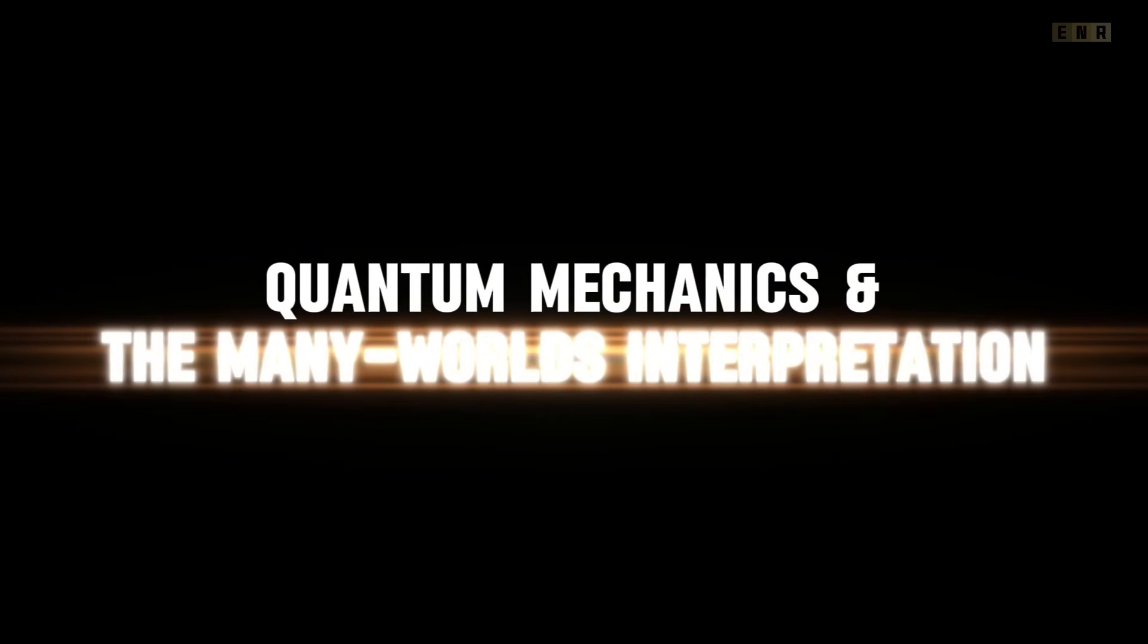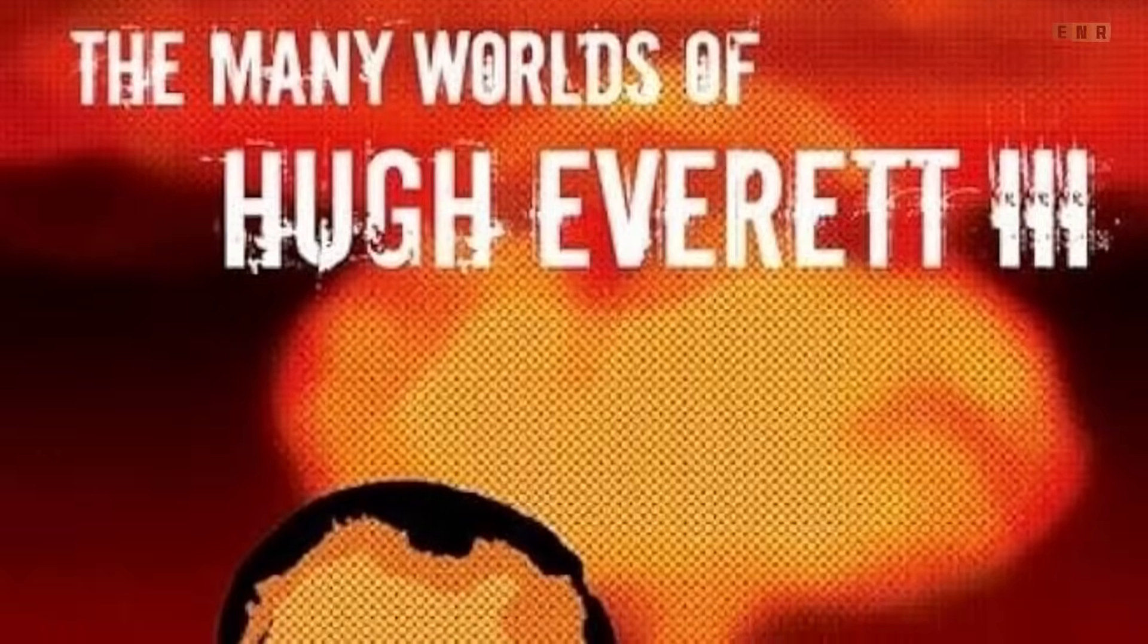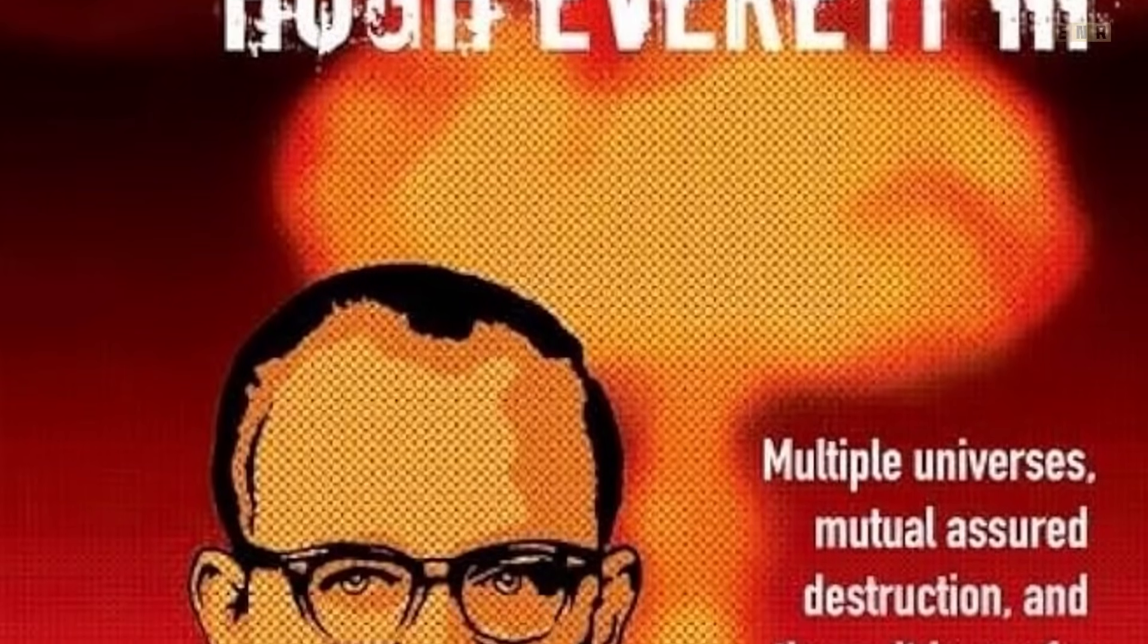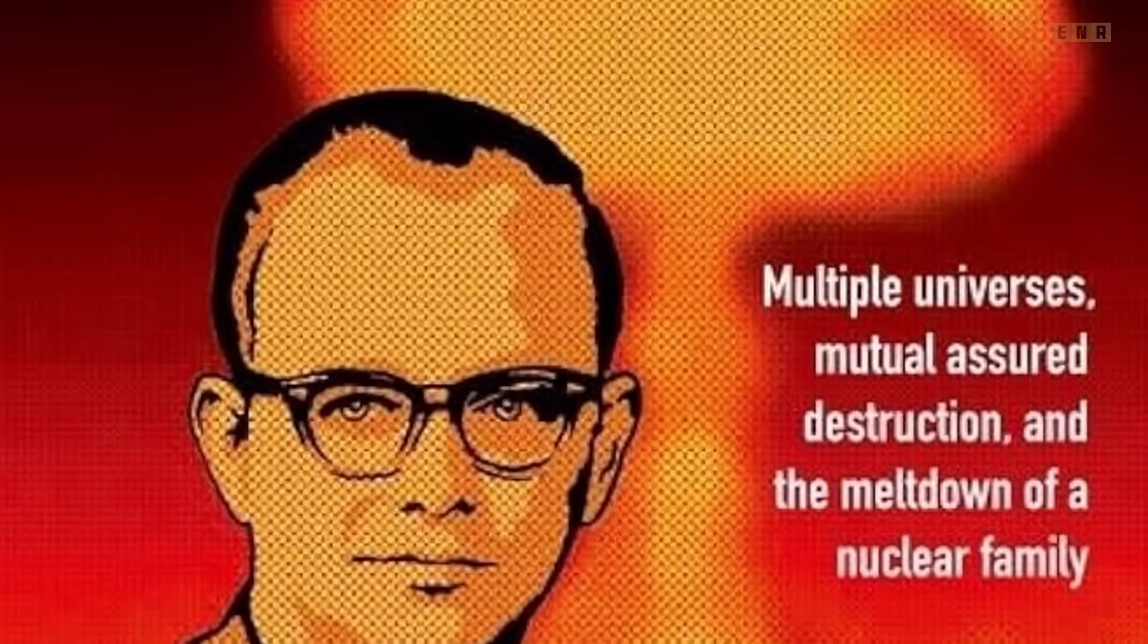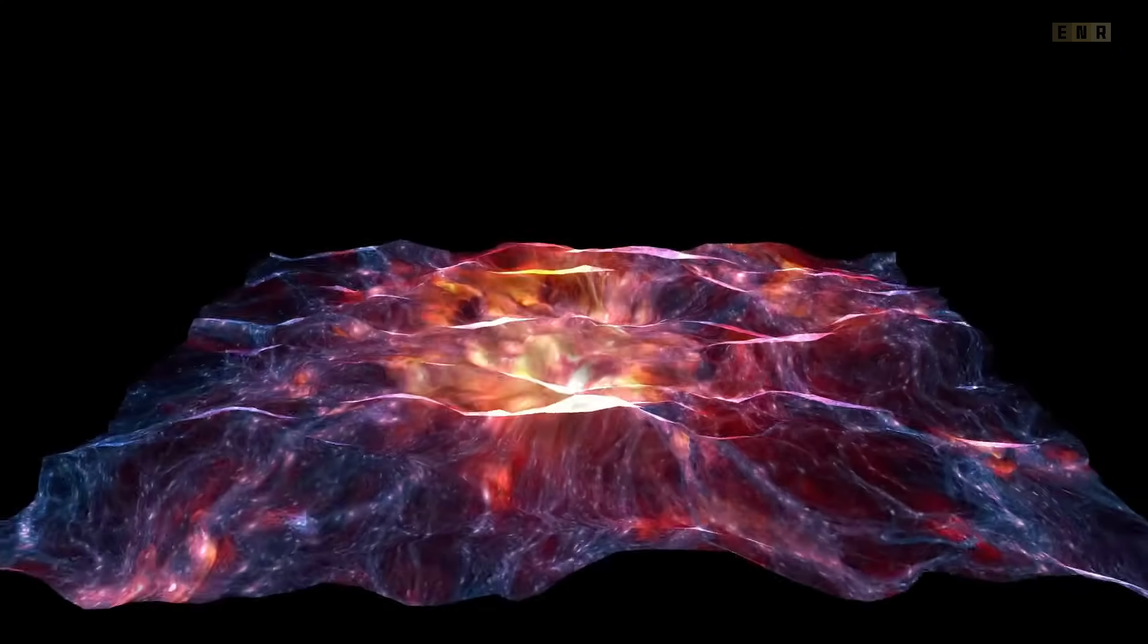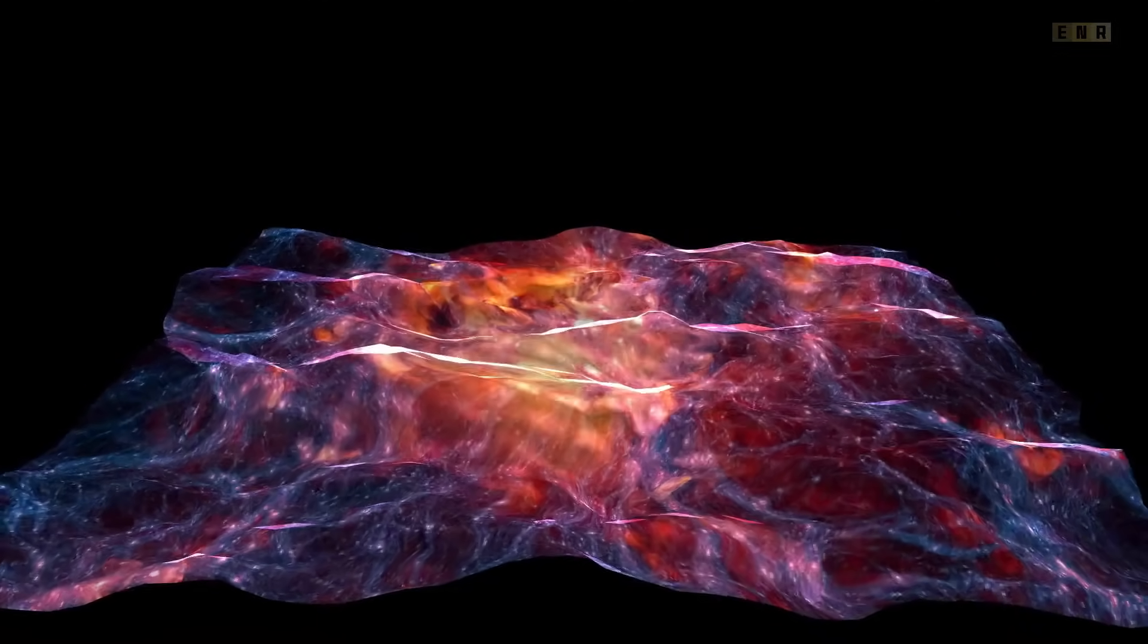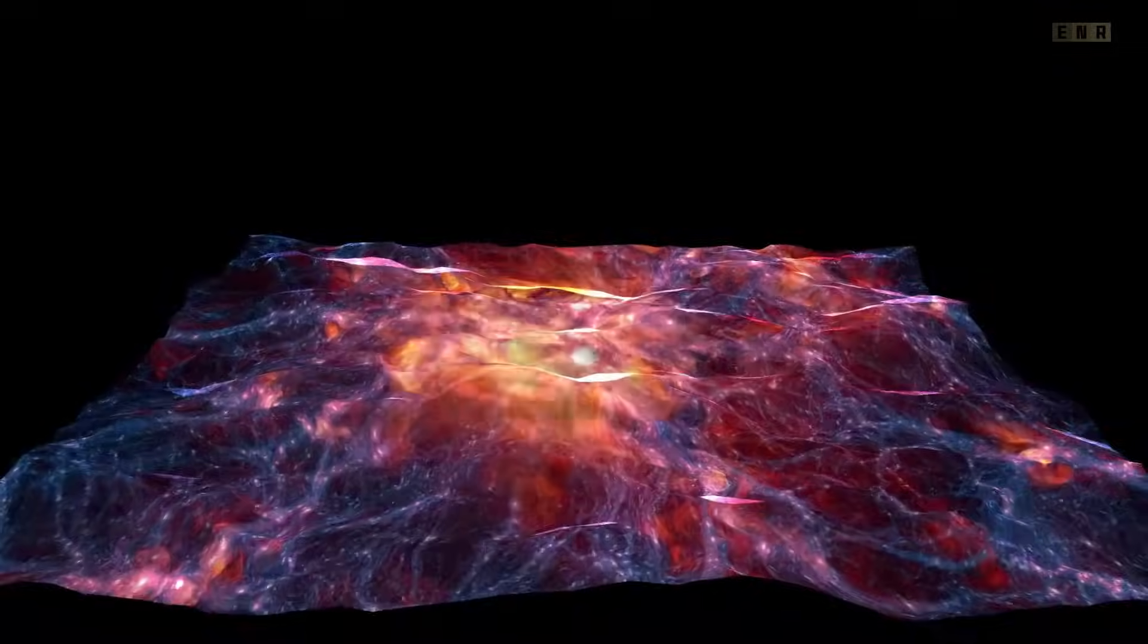Quantum Mechanics and the Many Worlds Interpretation. The Many Worlds Interpretation, first proposed by physicist Hugh Everett, suggests that all possible outcomes of quantum processes actually occur, each in its own distinct universe. This interpretation eliminates the need for wave function collapse, which traditionally resolves quantum uncertainty in a single, observed outcome.